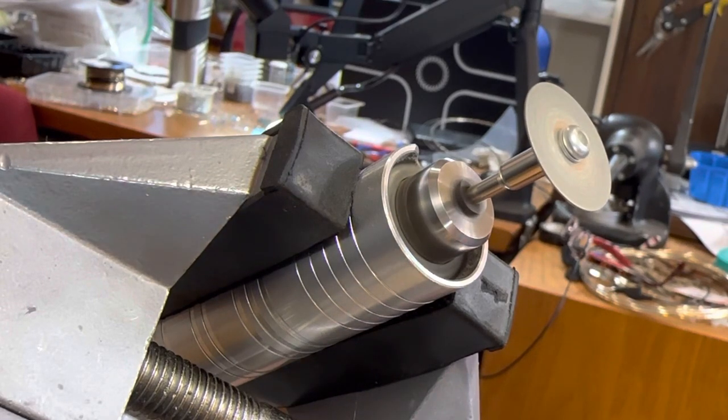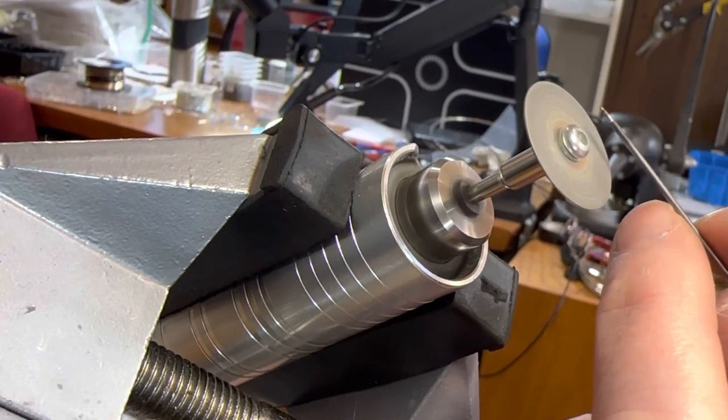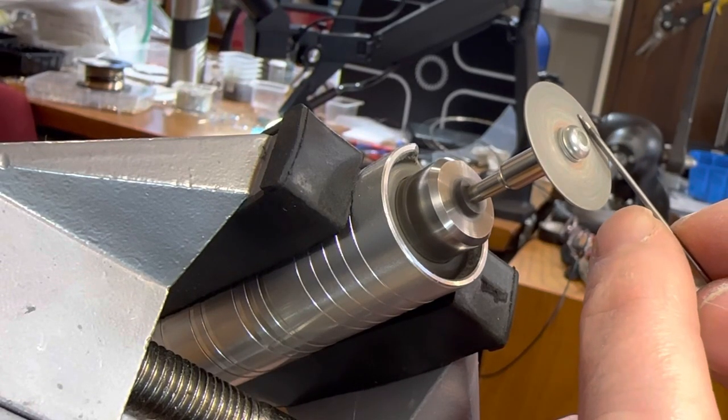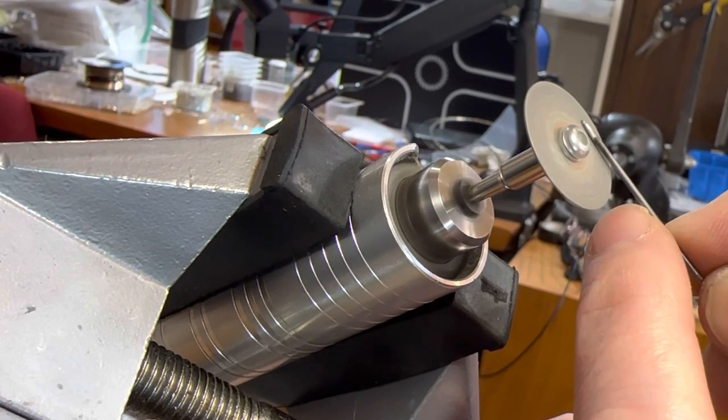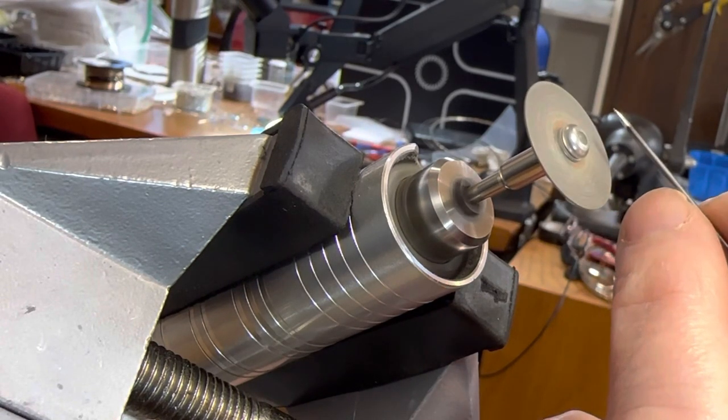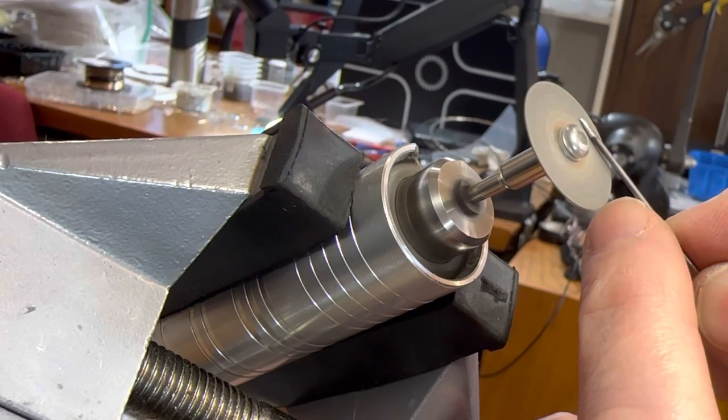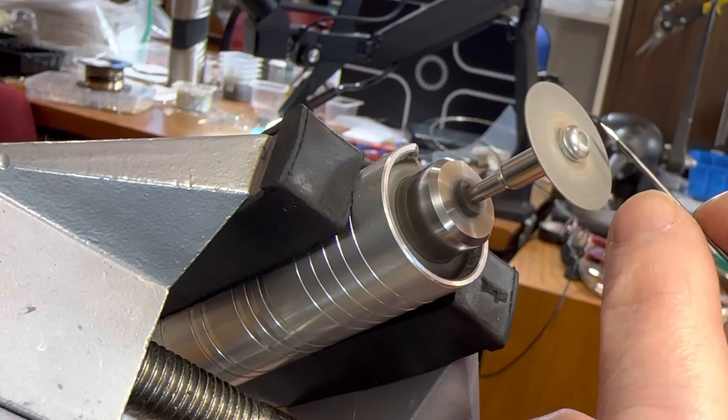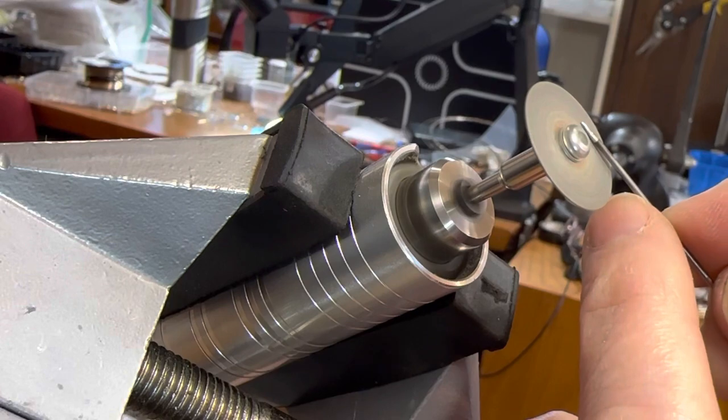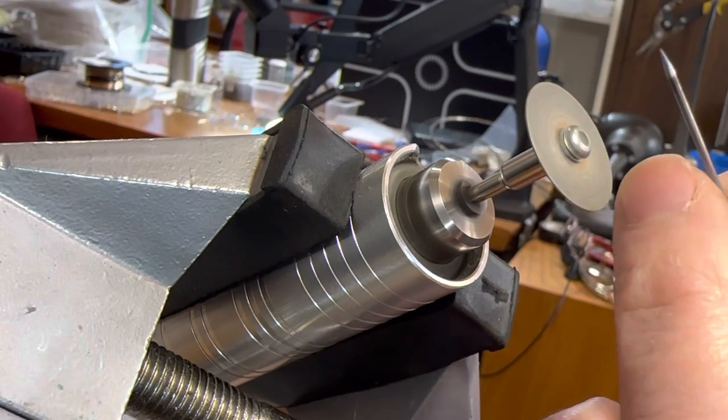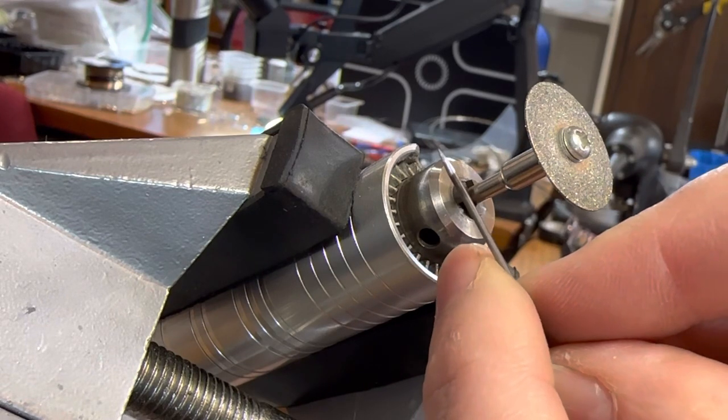I'll do one more here. I'm just steadying my hand on the table to try to keep my angle consistent. Just turn as I go. And there it is. Nice sharp electrode.